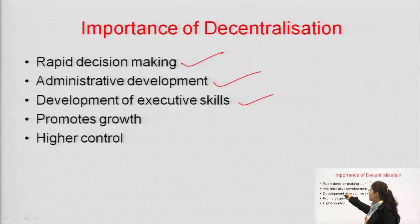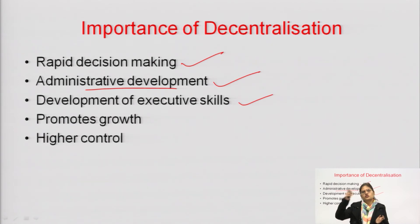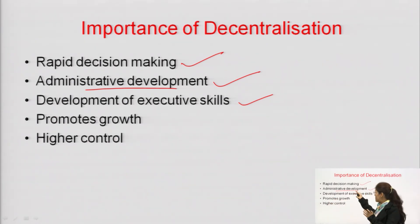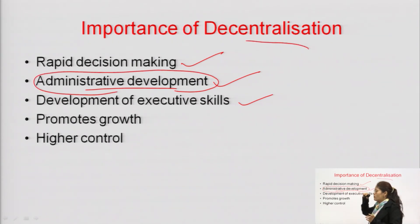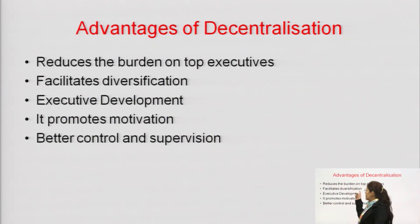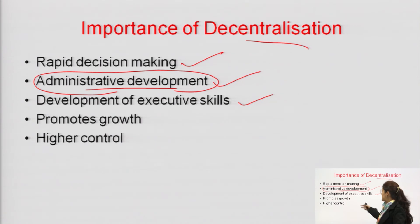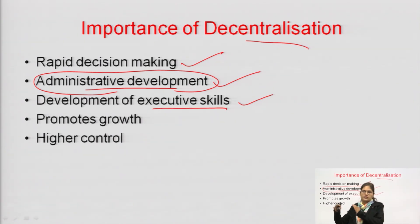Development of executive skills: administrative development means all things will be manageable and managed easily because there is decentralization and a division of work. No single person is responsible for everything — there are certain people and different departments responsible for their own work. So obviously administration will be effective in decentralization. Once authority and responsibility are allotted to the heads of departments or staff officers, they will have better executive skills because they get the opportunity to manage the whole department according to their own skills.